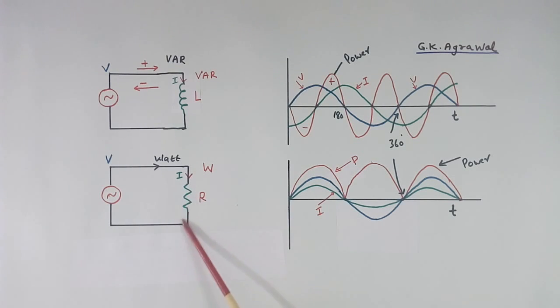Here I have connected one resistor. This is voltage and this is current. When we multiply voltage and current, we get power. From here to here, current also negative, voltage also negative. If we multiply both negative, we get positive. So power is always positive in this case. So power always flows from source to load. No power oscillations are here.